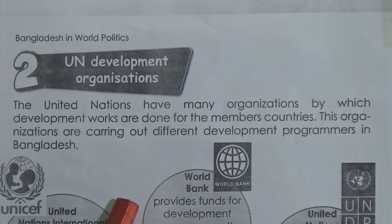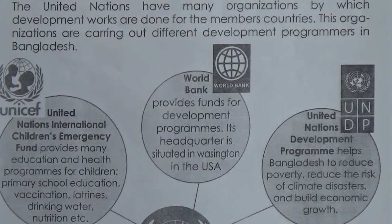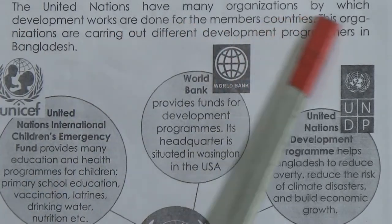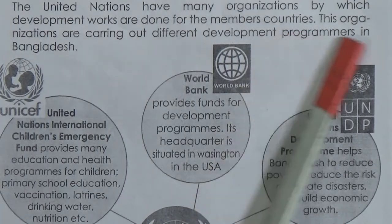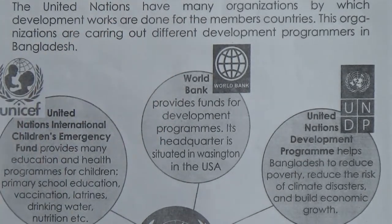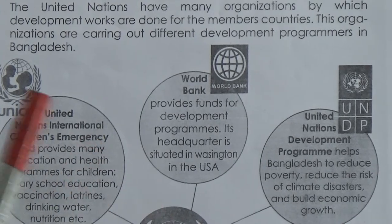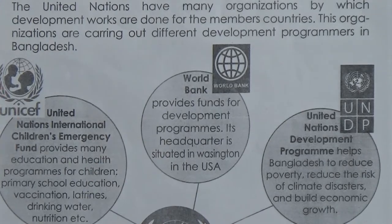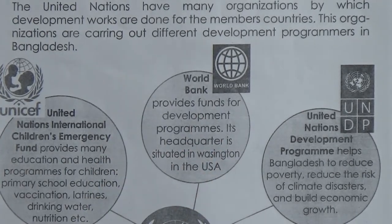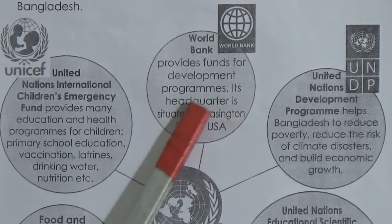In lesson one we learned about the six administrative branches of the United Nations. Now we will know about the six development organizations of the United Nations. Through these organizations, the United Nations carries out development works among member countries. These organizations carry out different development programs in Bangladesh and throughout the world.